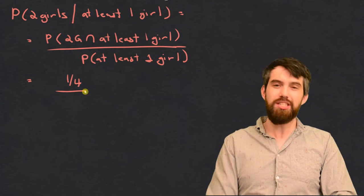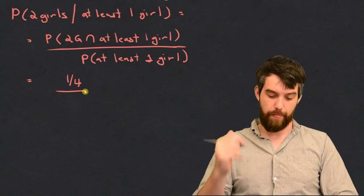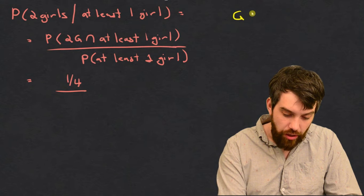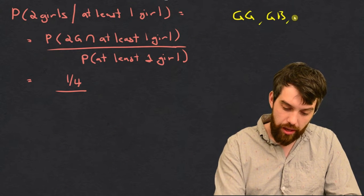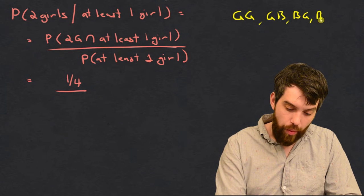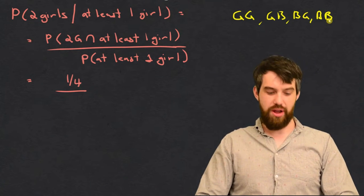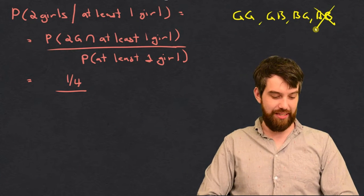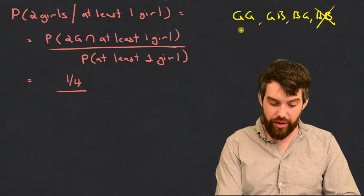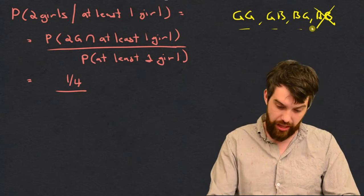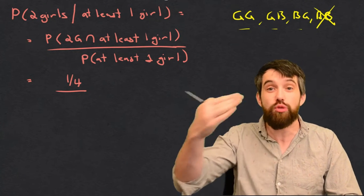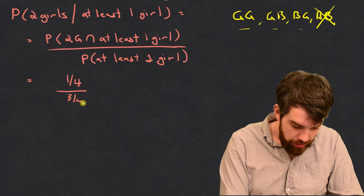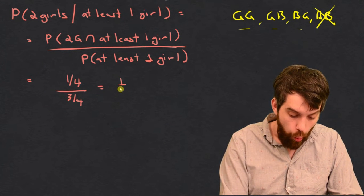Now what about the bottom? What is the probability that there is at least one girl? The four possibilities are girl-girl, girl-boy, boy-girl, and boy-boy. Of those four, there's only one that doesn't work: boy-boy, because that does not have at least one girl. The three other cases all have a girl, and they're equally likely. So the probability of at least one girl is three out of four — three quarters. Therefore, the result is one third.